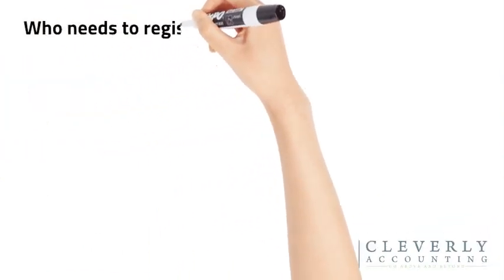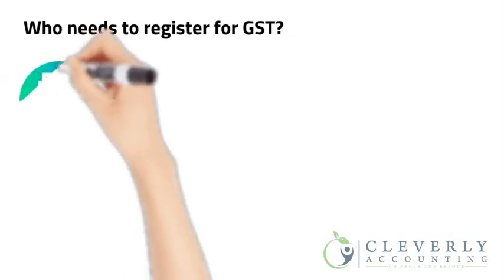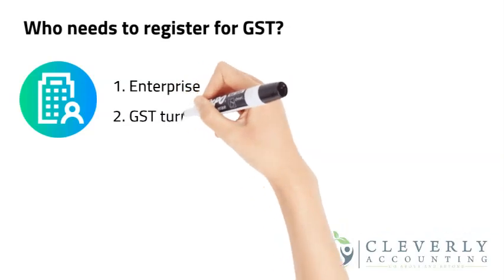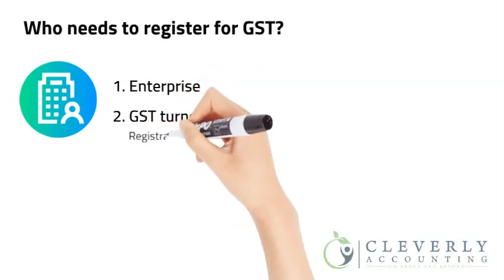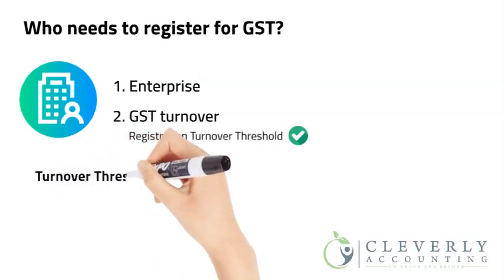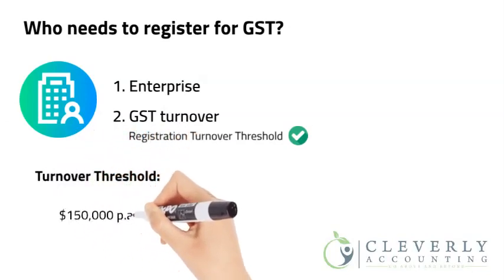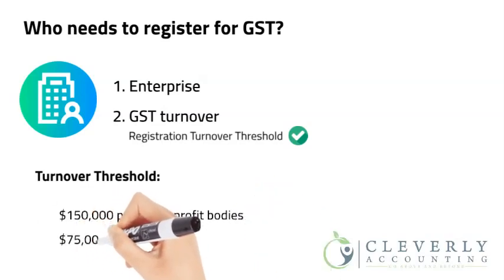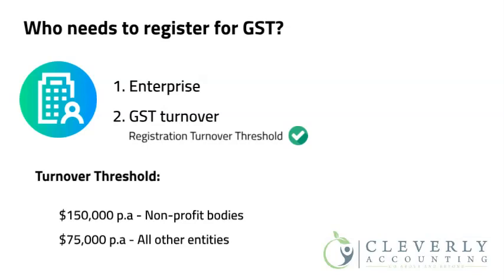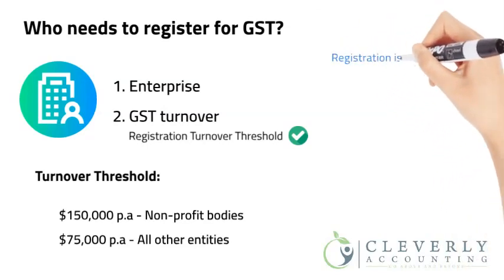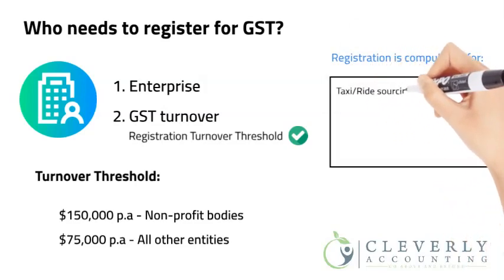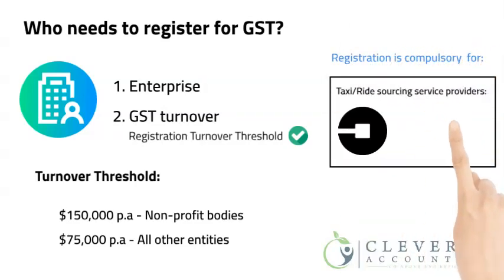Who needs to register for GST? An entity is required to register for GST if it carries on an enterprise and its GST turnover meets or exceeds the registration turnover threshold. The turnover threshold is currently set at $150,000 per annum for non-profit bodies and $75,000 per annum for all other entities. However, registration is compulsory regardless of the level of turnover for entities that provide taxi or ride-sourcing services such as Uber and Didi.